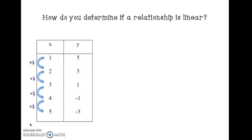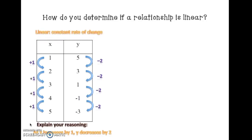Let's look at the y values. We start at positive 5 and go to negative 3, so it's decreasing. From 5 to 3, 3 to 1, 1 to negative 1, negative 1 to negative 3 — the y value is decreasing by 2. As the x value increases by 1, the y value decreases by 2, so this is linear. Don't get confused because x is increasing and y is decreasing — as long as you have a constant rate of change, it is a linear relationship.